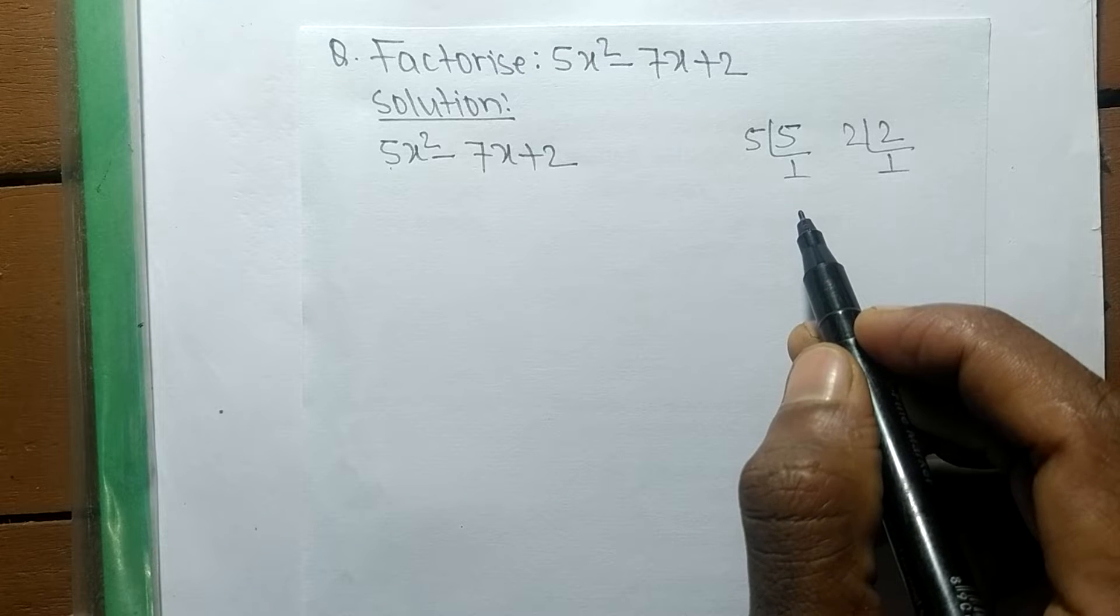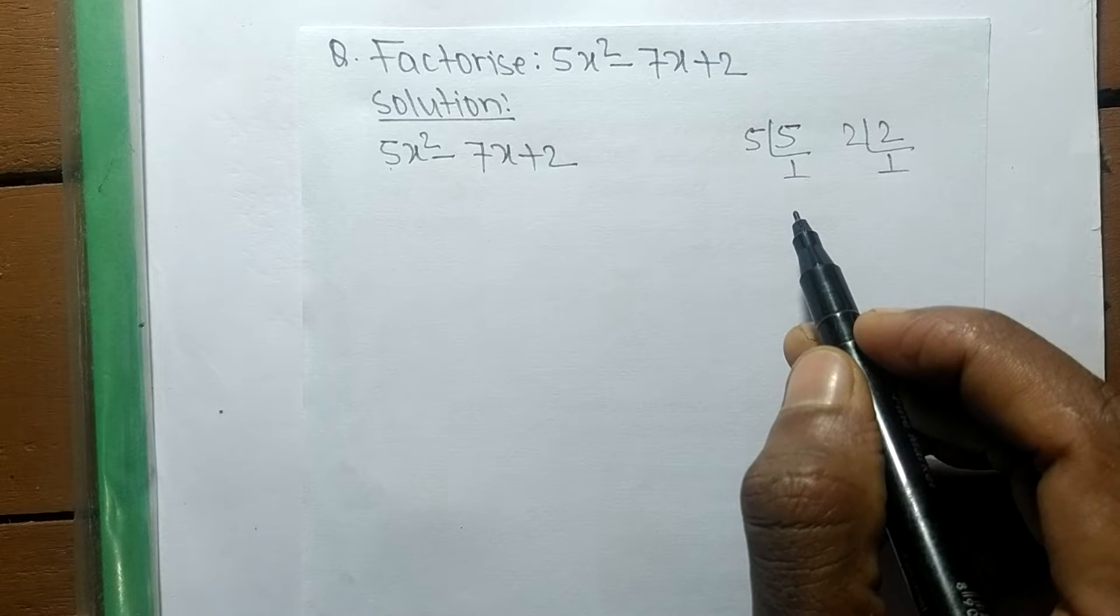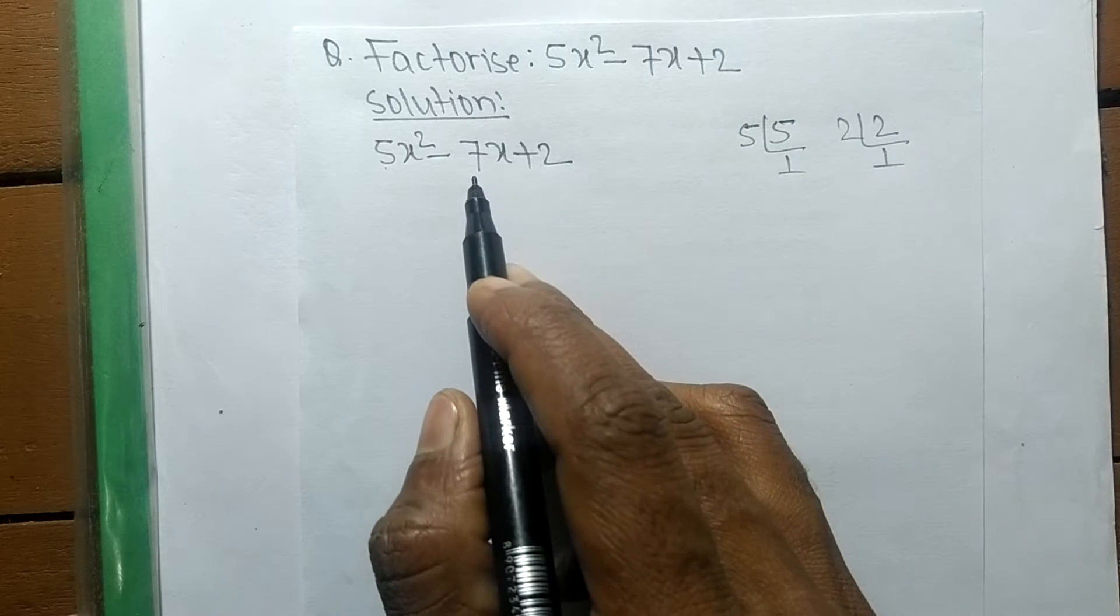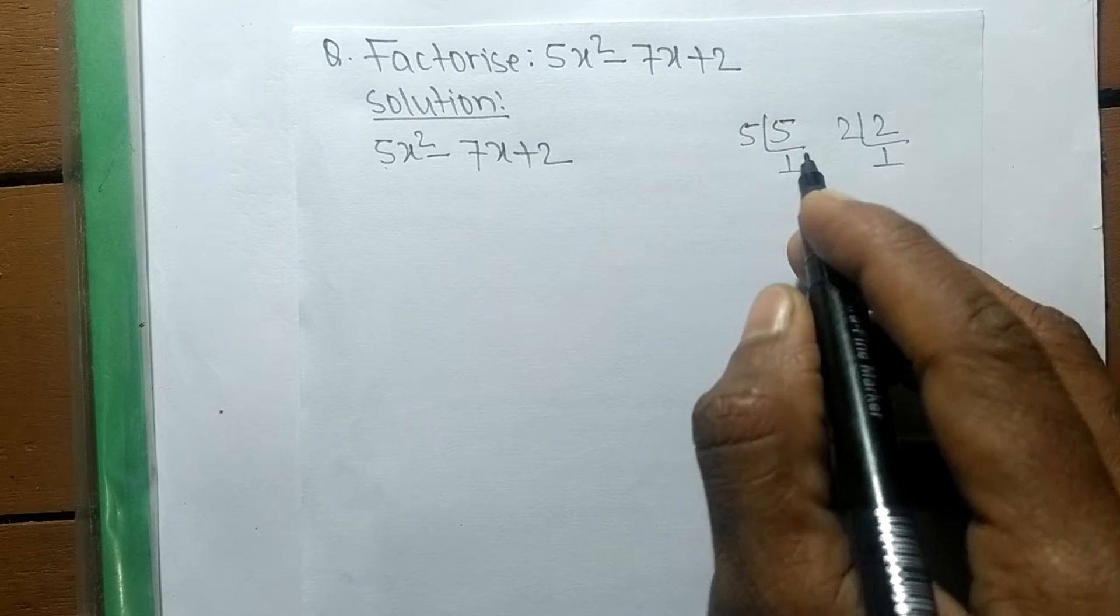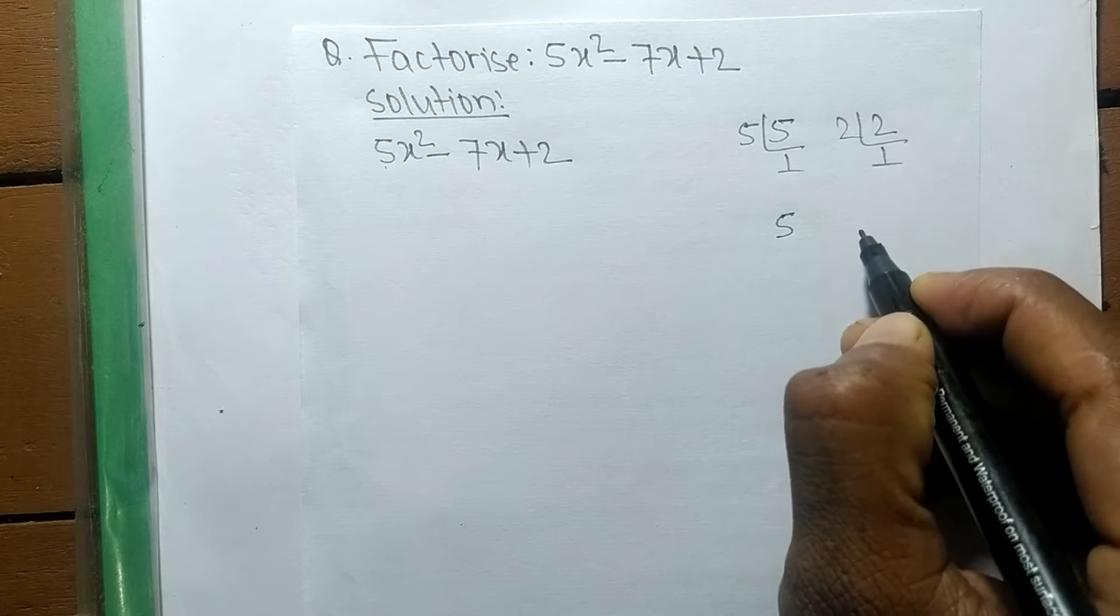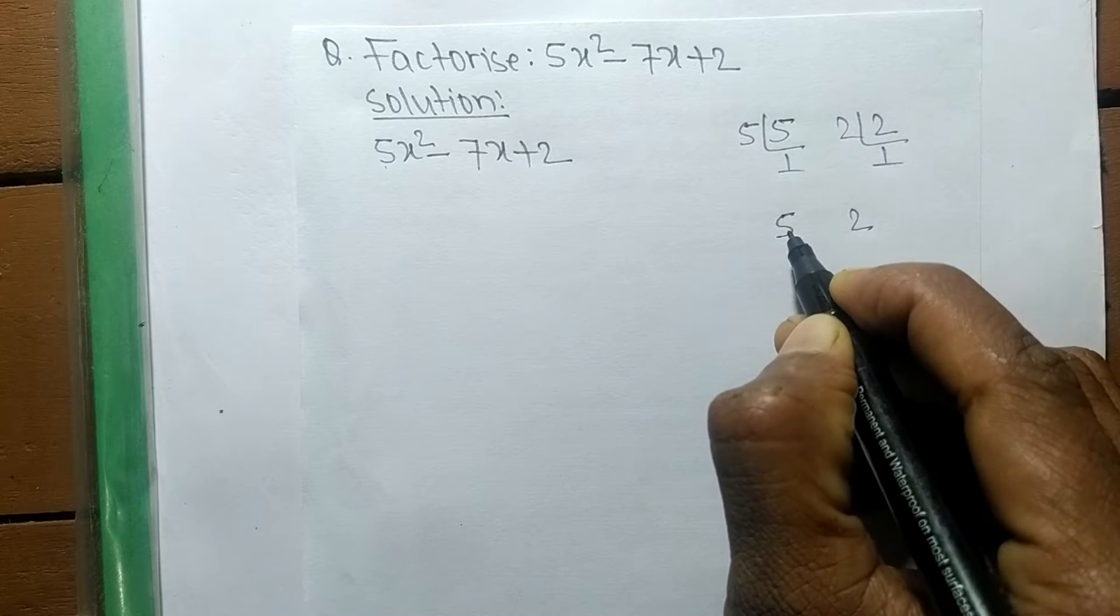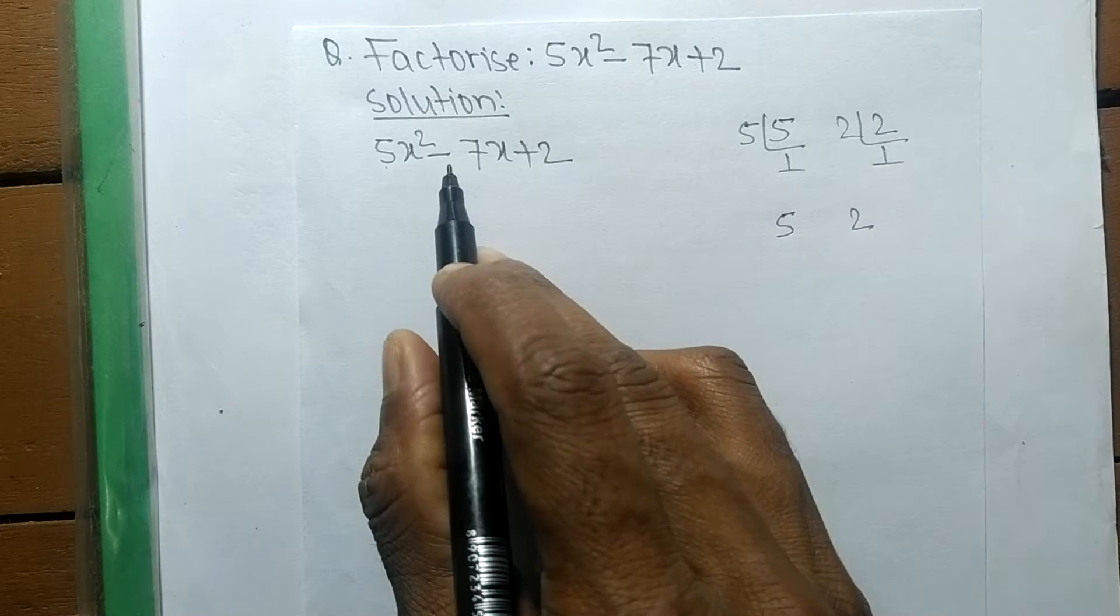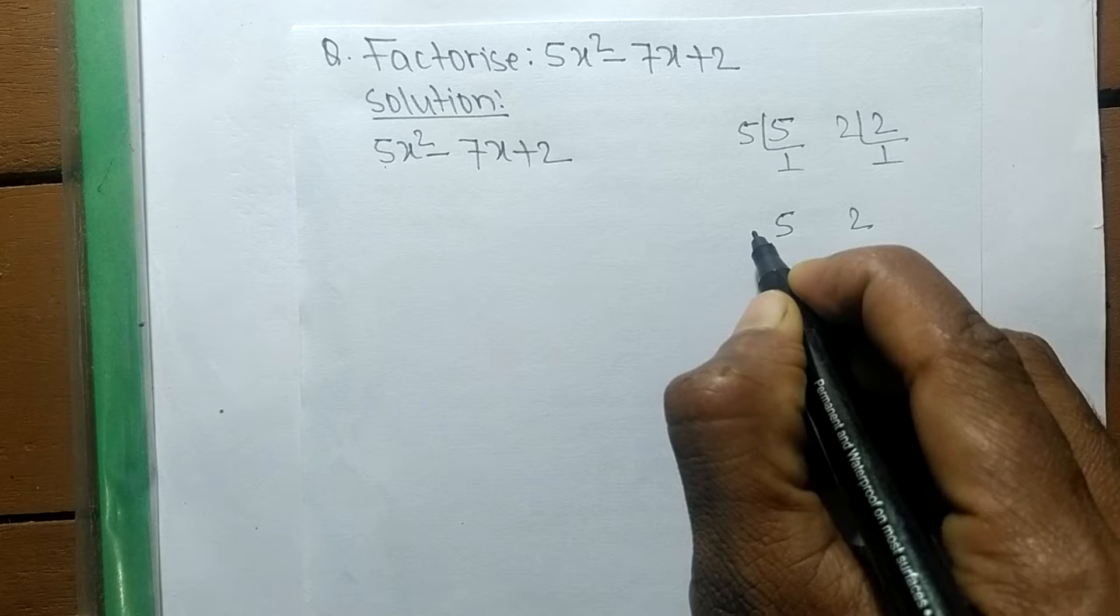By multiplying within these numbers we have to find out such a number that by adding of which we have to get the result 7. So when we take 5 times 1, which means 5, and 2 times 1, which means 2, so 5 plus 2 means we get the result 7.